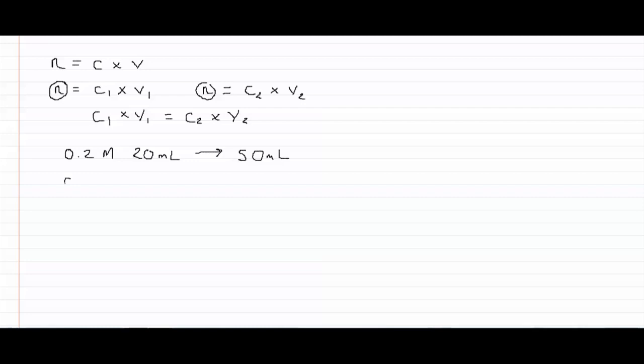So we come to our relationship that C1 times V1 equals C2 times V2. So what we want to do is rearrange this equation to isolate C2.